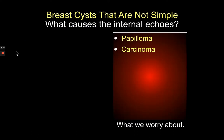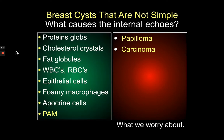What we worry about in non-simple cysts are papillomas and carcinomas. But what it usually turns out to be is protein globs, cholesterol crystals, fat globules, white cells, red cells, epithelial cells, foamy macrophages, individual apocrine cells, and papillary apocrine metaplasia — abbreviated PAM.